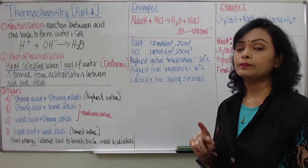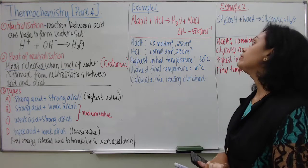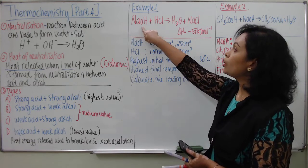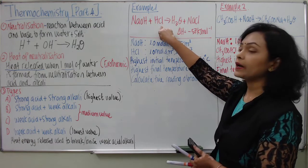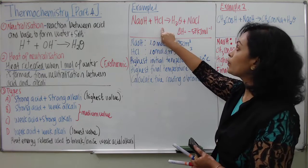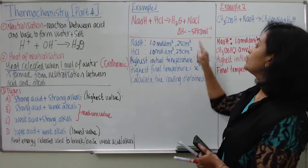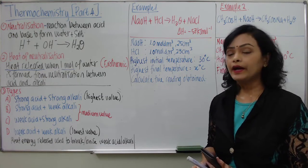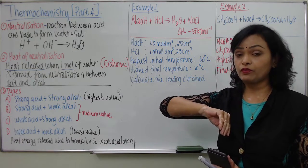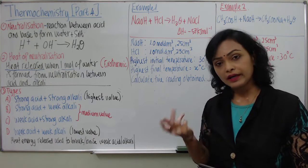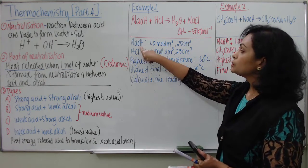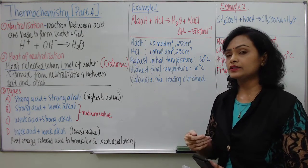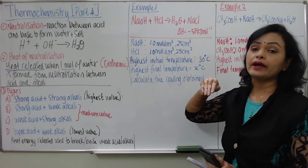Now let me show you two examples on how to calculate heat of neutralization. In the first example, teacher has given a strong acid being neutralized with strong alkaline — sodium hydroxide neutralized by hydrochloric acid to produce water and sodium chloride. The heat of neutralization is negative 57 kJ/mol. You are given the thermochemical equation and all the information including the highest initial temperature — the temperature of both sodium hydroxide and hydrochloric acid combined.